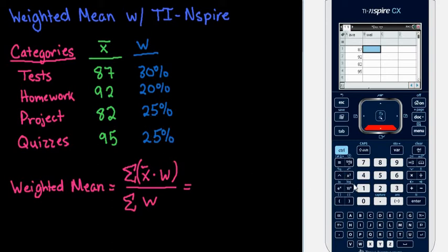Either way, it's going to give you the same answer because remember that it's going to divide by the sum of the weights. So it'll either divide by 100% or it will divide by 1 if you put it in as decimals. So either way, you'll get the same answer. So let's go ahead and just put it in as 30, 20, 25, and 25.